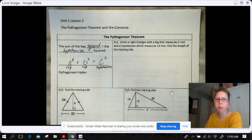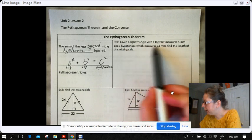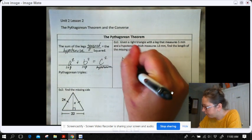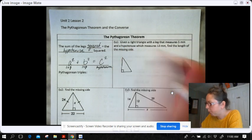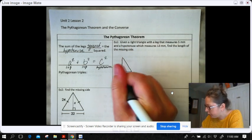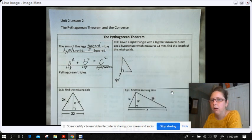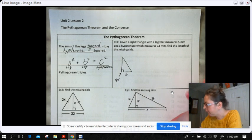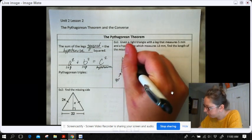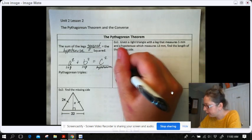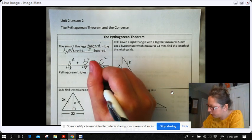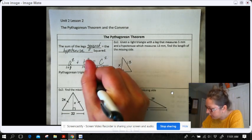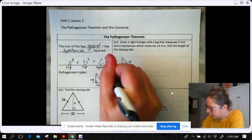We are going to jump right in with Example 1. Given a right triangle with a leg that measures 5 millimeters, let me go ahead and draw that. When there's this little box in the corner, that means that it is 90 degrees, so you know that it's a right triangle. I have a leg that measures 5 and I have a hypotenuse that measures 13. This is a leg, this is a leg, and this is the hypotenuse right here.